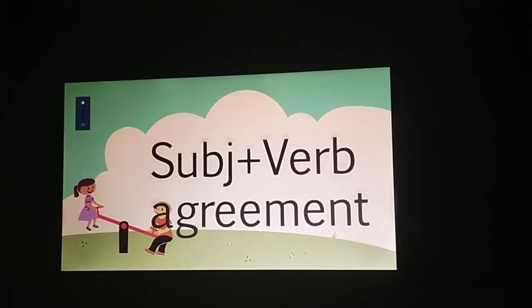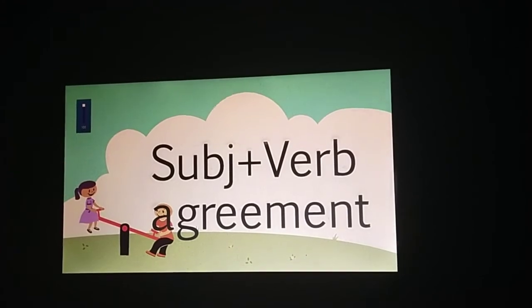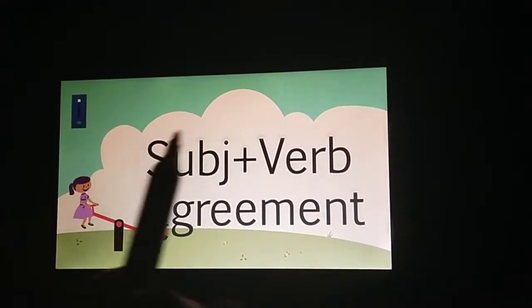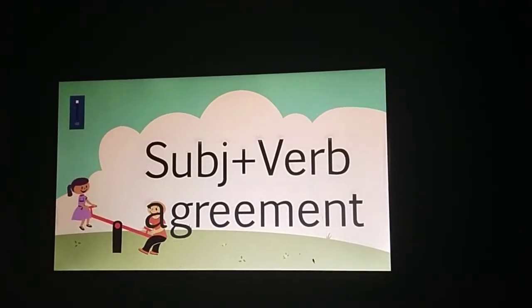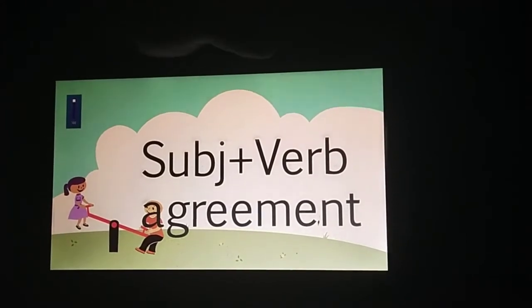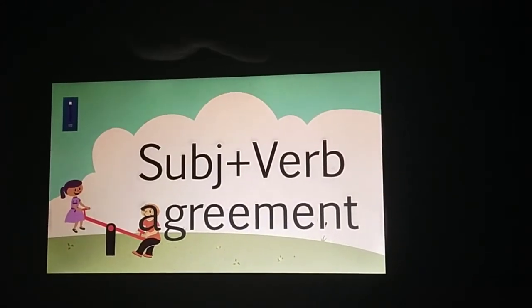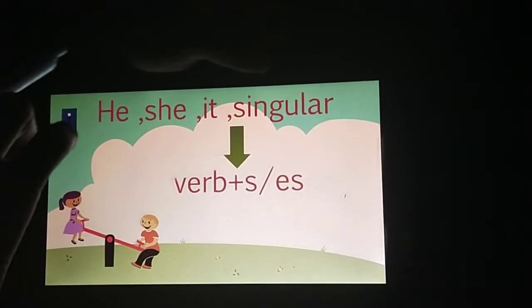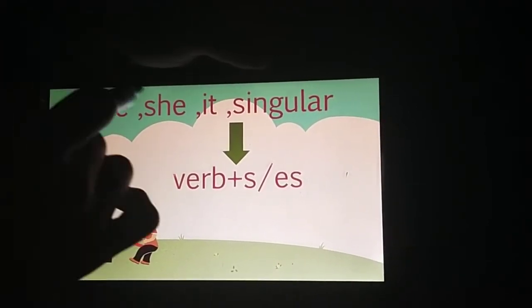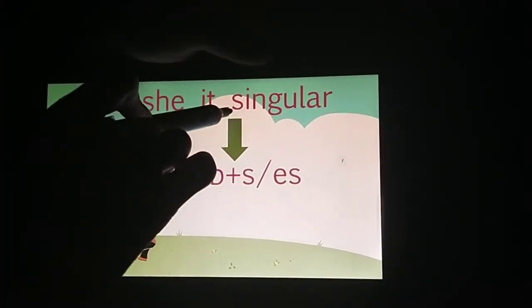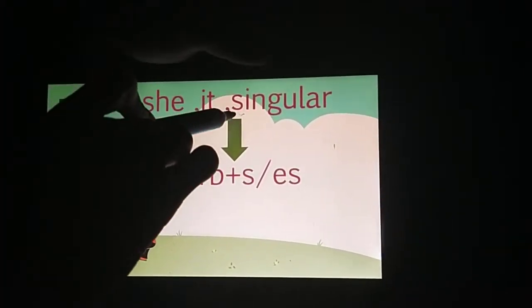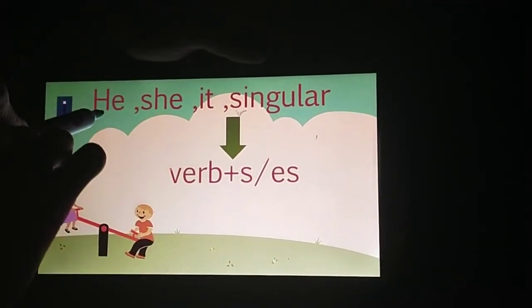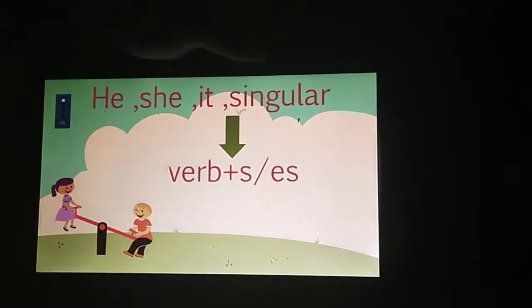Present Simple میں subject اور verb کا agreement ہوتا ہے۔ Subject اور verb کا agreement ہوتا ہے — کیا ہوتا ہے؟ Subject جو ہوتے ہیں، اگر وہ singular ہوں، یا he، she، it ہو...